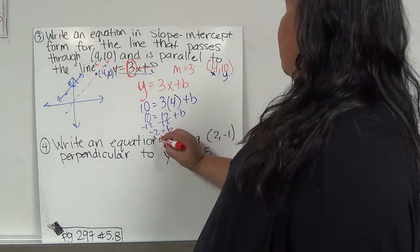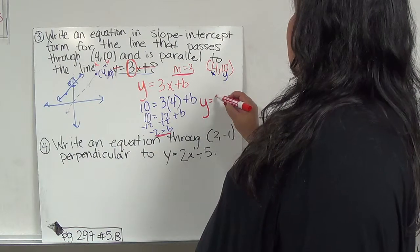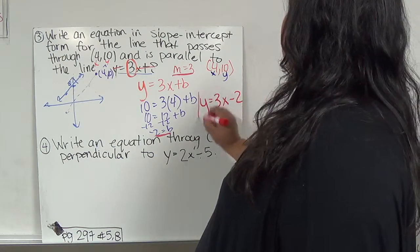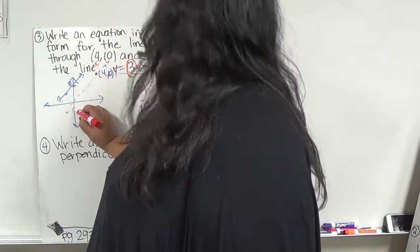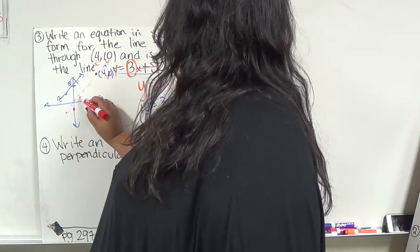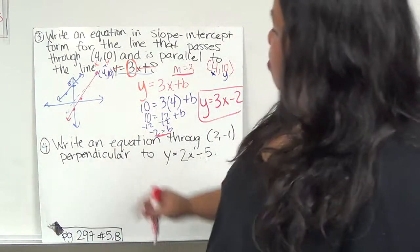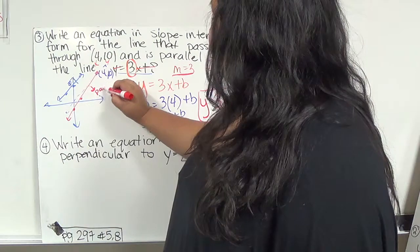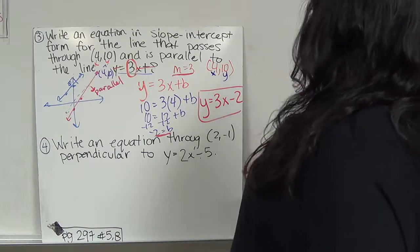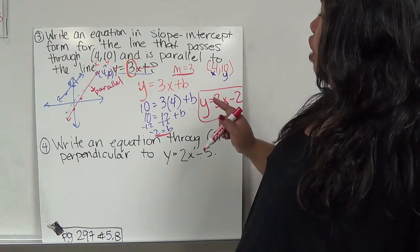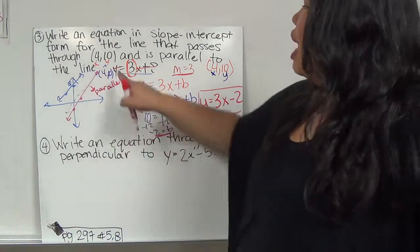Because now, b is the only variable left. So 10 equals 3 times 4 plus b. This is 10 equals 12 plus b. I'm going to subtract 12 from both sides. I end up with negative 2 equals b. So what this tells me is here's my m and here's my b. So now I have my equation, y equals 3x minus 2. And what this equation is telling me is that starting from negative 2, if I go up 3 over 1, this is my parallel line.